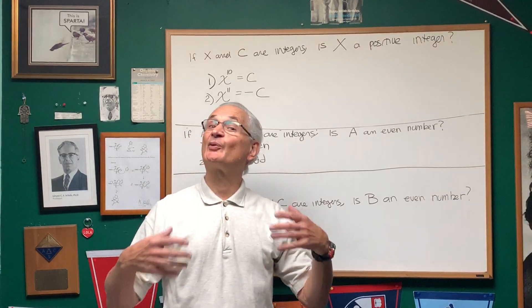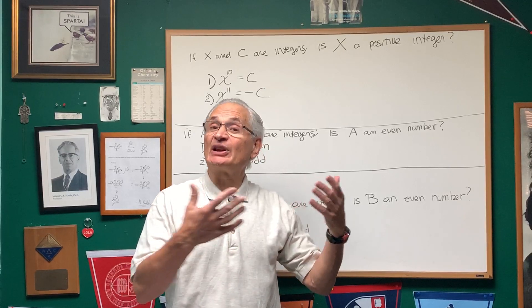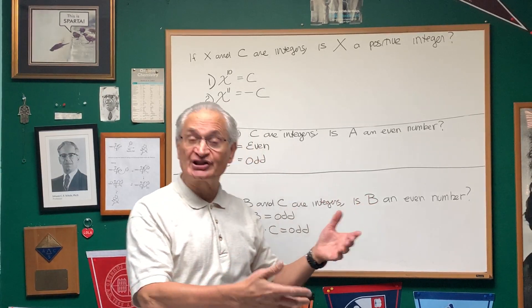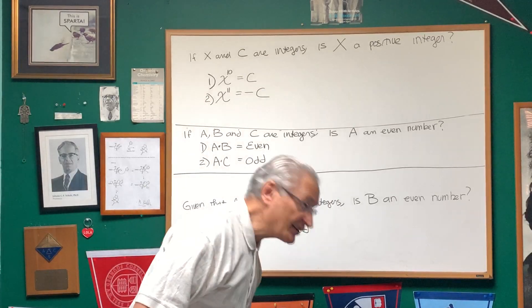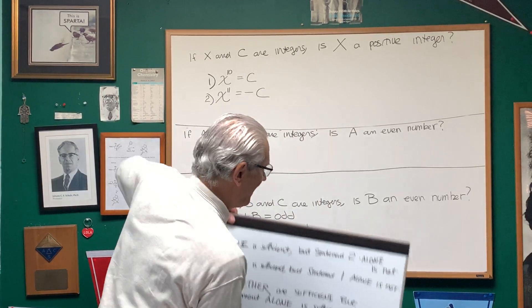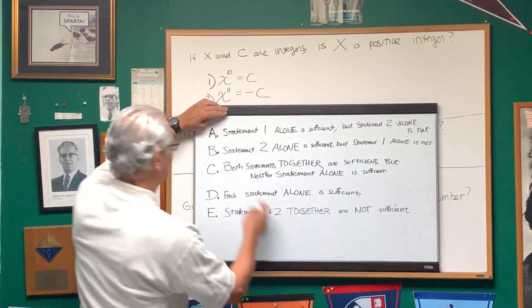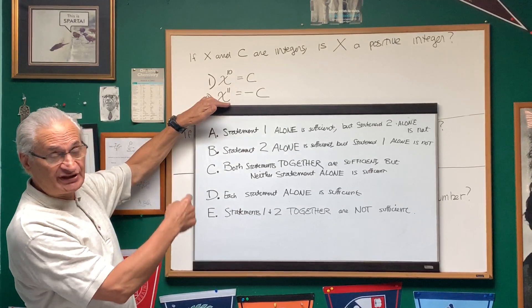Okay, this is a type of problem and we're going to have to decide whether the information in two given statements is sufficient or not sufficient in answering a given question. Now this is a type that's been recently appearing on the DAT and the preamble is like this. The answer to the question is going to be one of these statements, A, B, C, D, or E.